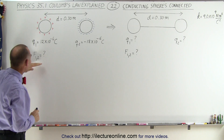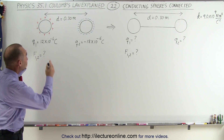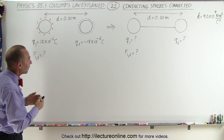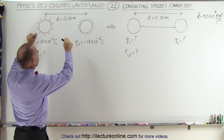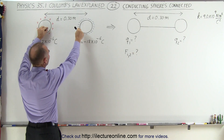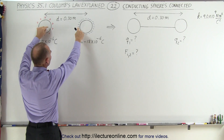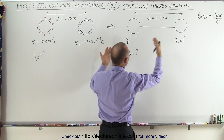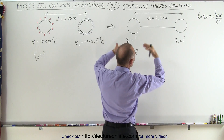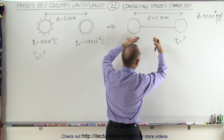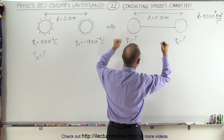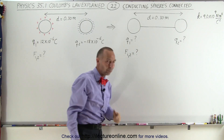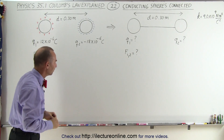First, what we're going to do is find the force between the two charged objects. After that, we're going to connect the two spheres with a conductor, and then we're going to find out how the charge is going to redistribute itself over the two spheres, and then find the force between the two charged objects again.